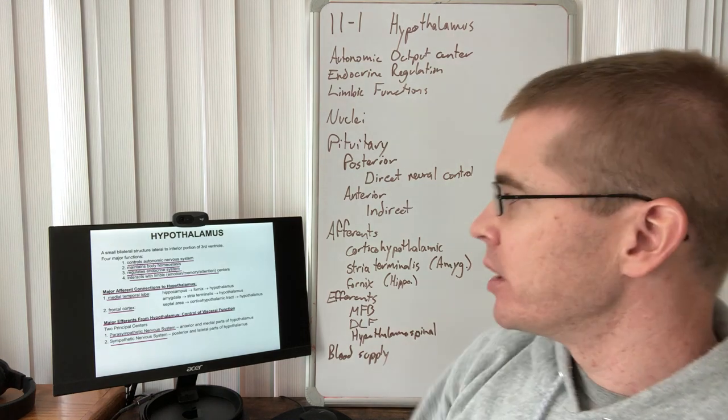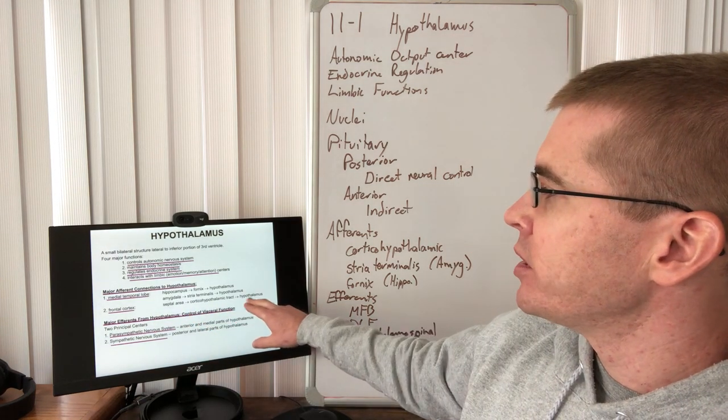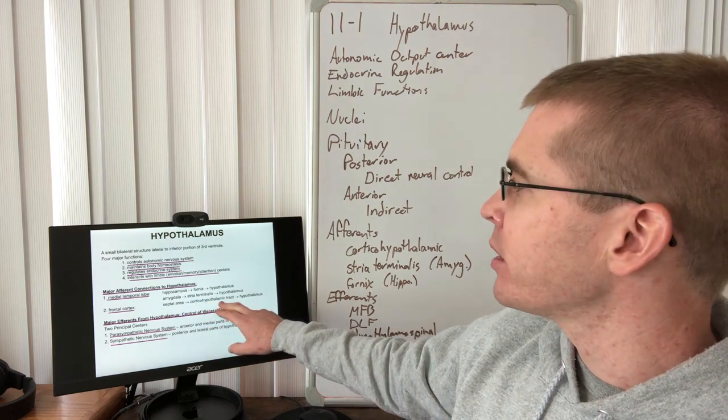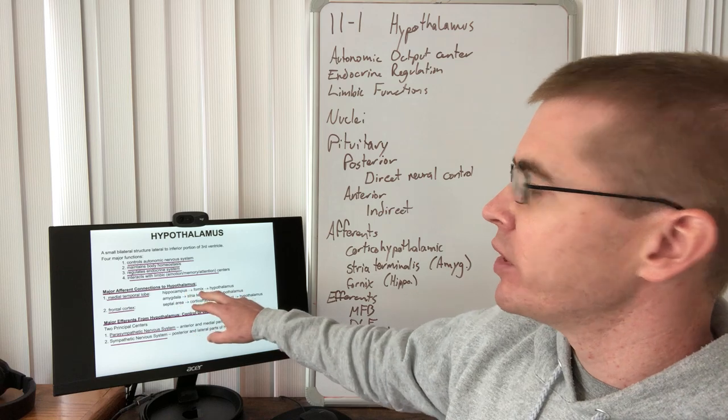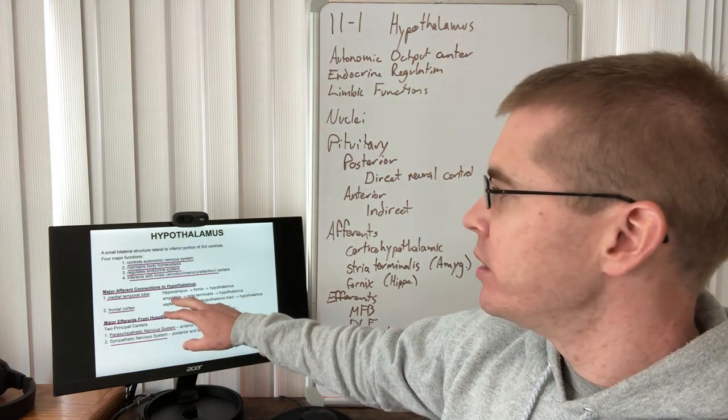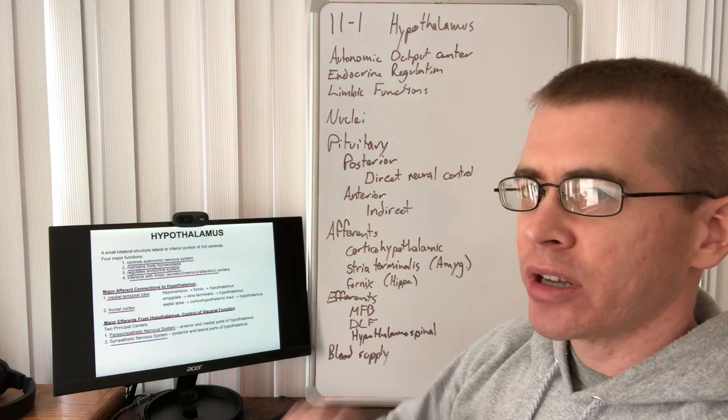Septal area, limbic functions inputting to hypothalamus via the cortico-hypothalamic tract. The hippocampus via the fornix to the hypothalamus. The amygdala via stria terminalis to the hypothalamus.